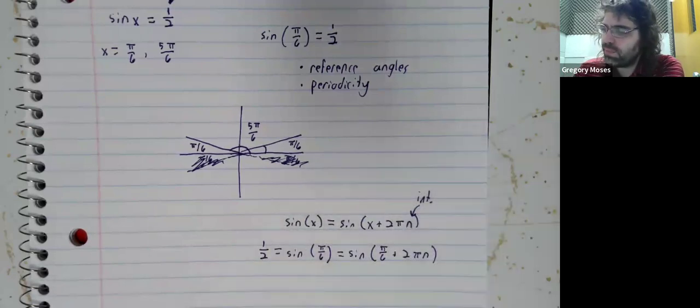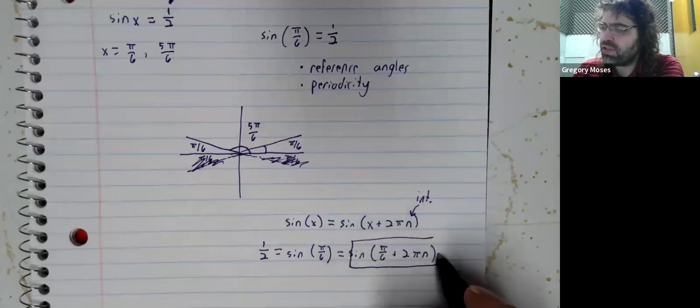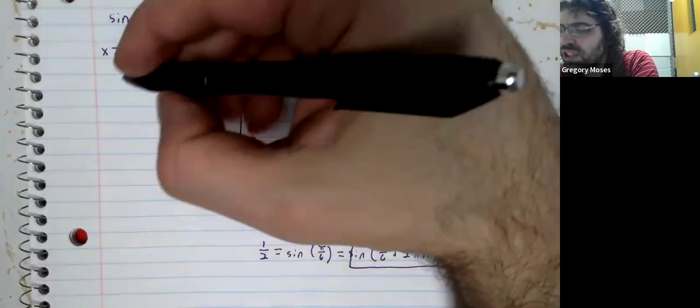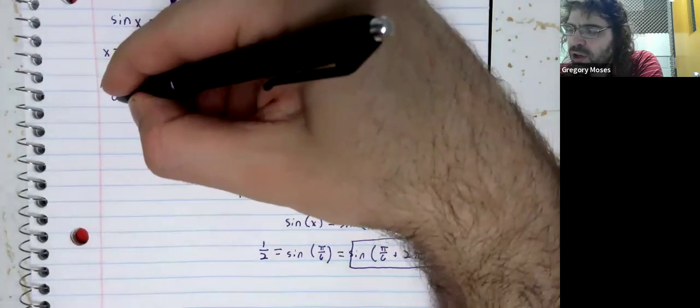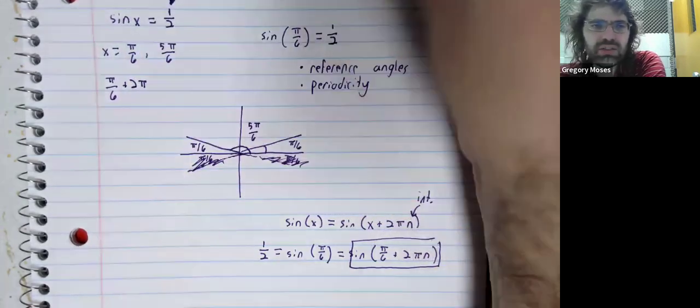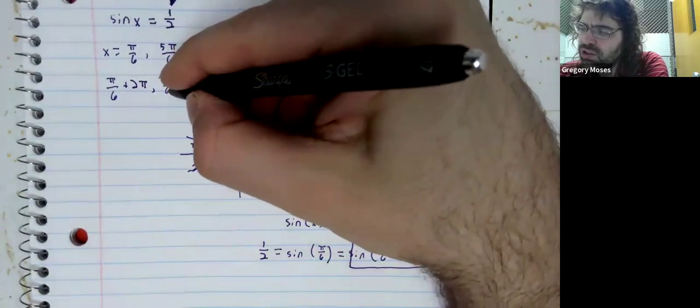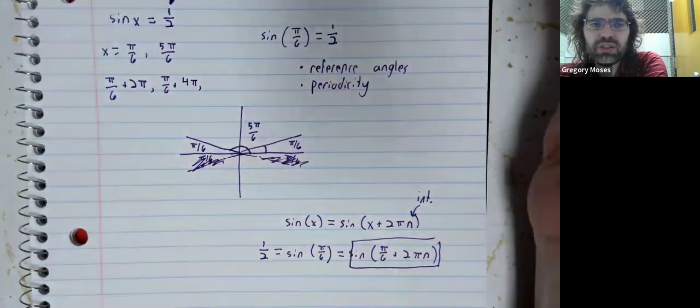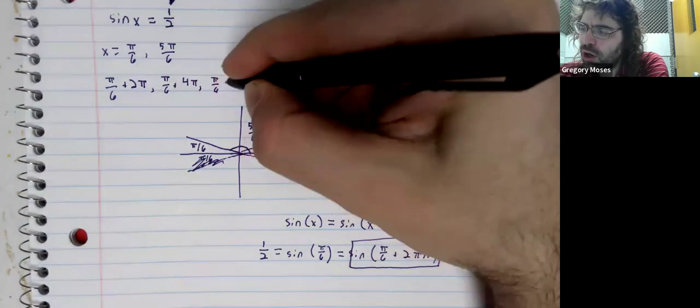Pi over six plus 2 pi is a solution. Pi over six plus 4 pi is a solution, and so on.